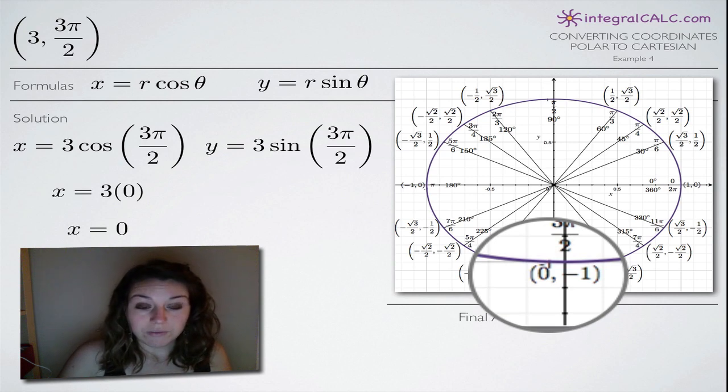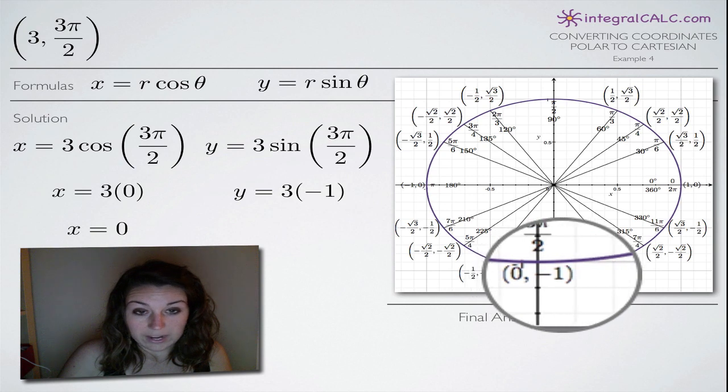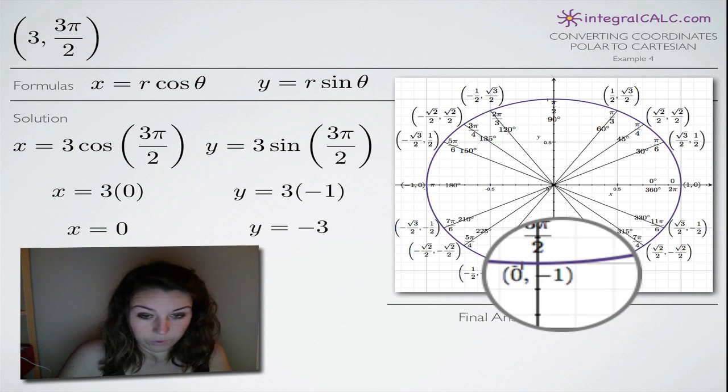Now we do the same thing for y and we get negative 1 for sine of 3π/2. And when we simplify that, we of course get negative 3.